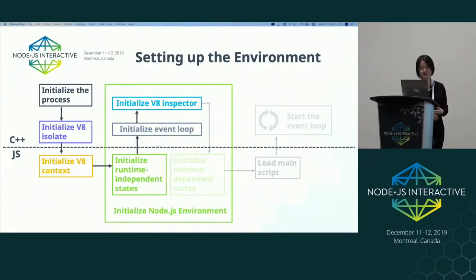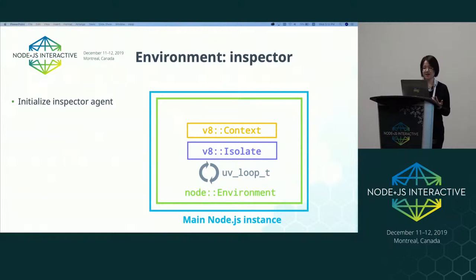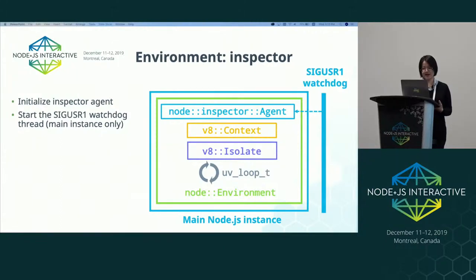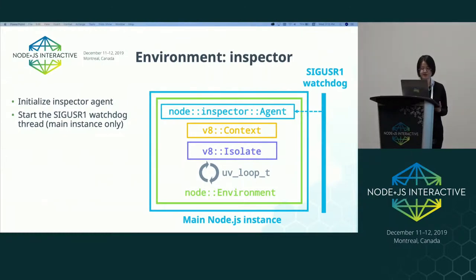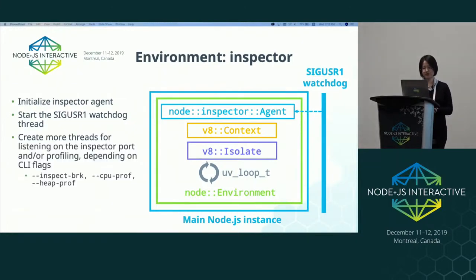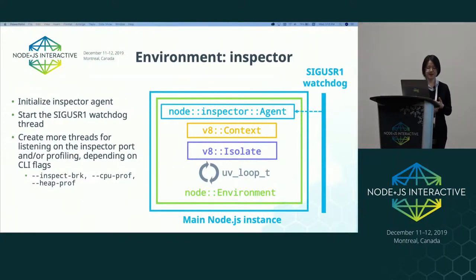After the event loop is fully initialized, we then initialize the V8 inspector, which is used for JavaScript debugging. This includes initializing the inspector agent, which is done even when the inspector is not active. We'll also spawn a SIGUser1 watchdog thread that wakes up and asks the main thread to start listening on the inspector port when the user sends SIGUser1 to the process. This is only done for the main Node instances and not for workers. If the user passes, for example, --inspect-brk, --cpu-prof, or --cpu-prof when launching the instance, we'll also immediately create more threads for either listening on the inspect port or for profiling.